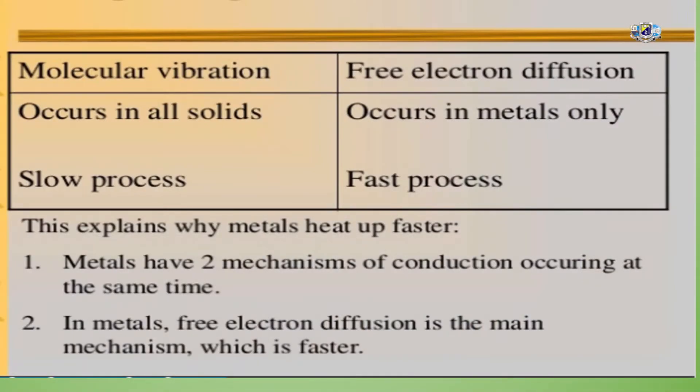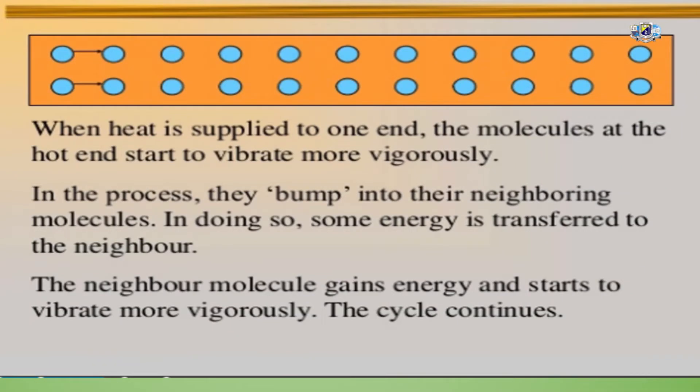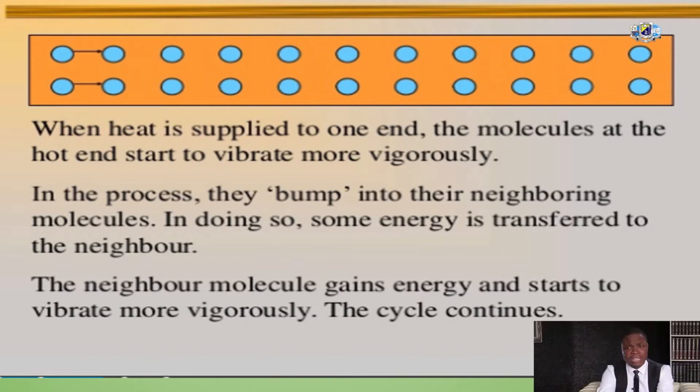Conduction occurs mainly in solids. There are two types of conduction: molecular vibration and free electron diffusion. Conduction is not the main form of heat transfer in liquids and gases because their molecules are spaced further apart. When heat is supplied to one end, the molecules at that end start to vibrate more vigorously. They bump into neighboring molecules, transferring some energy to them. The neighboring molecules gain energy and start to vibrate more vigorously, and this cycle continues until heat is transferred from one end of the solid to the other.